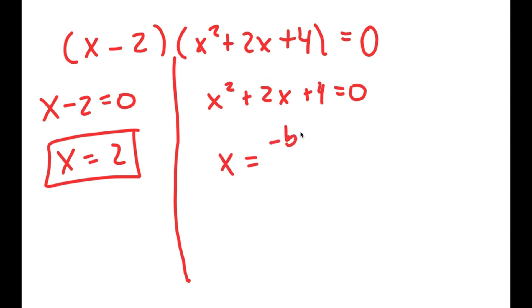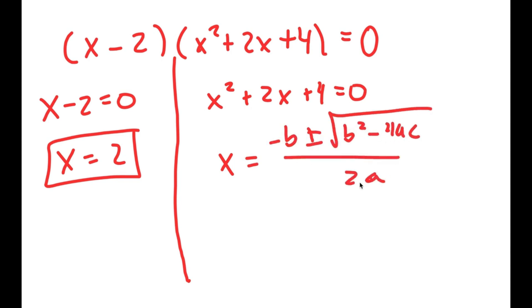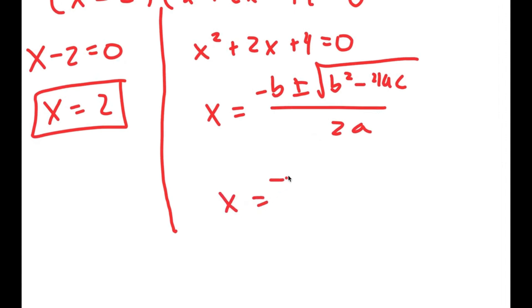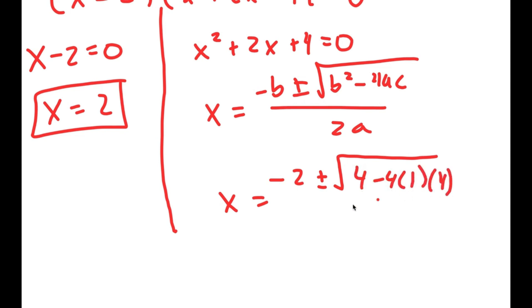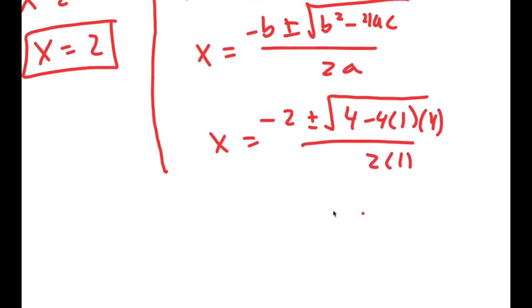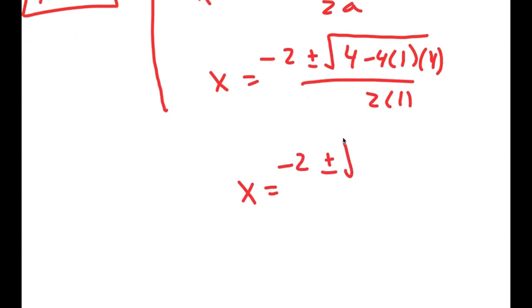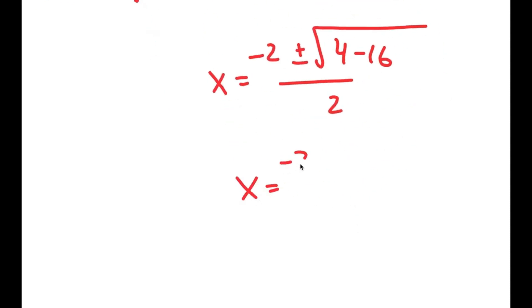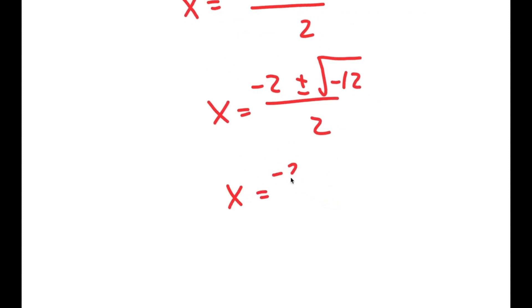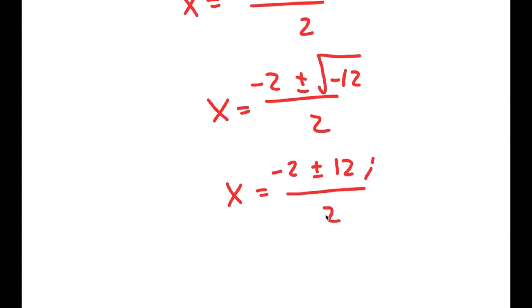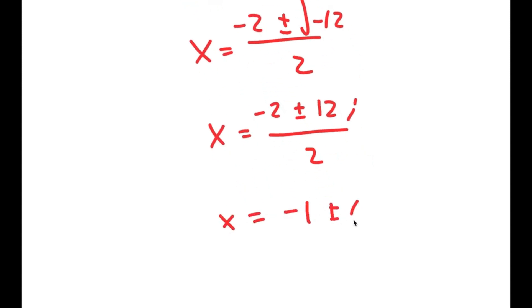So to solve this, I'm going to use the quadratic formula. I get negative 2 plus or minus the square root of 4 minus 4 times 1 times 4, all over 2 times 1. And this turns into negative 2 plus or minus the square root of 4 minus 16 over 2, which is equal to negative 2 plus or minus the square root of negative 12 over 2, which is equal to negative 2 plus or minus 2 times square root of 3 times i over 2, which is equal to negative 1 plus or minus square root of 3 times i.